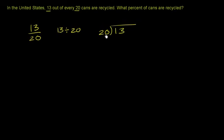So 13 divided by 20. We have the smaller number, in this case, being divided by the larger number. So we're going to get a value less than 1.